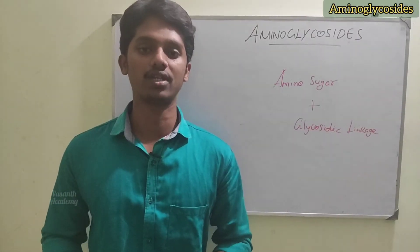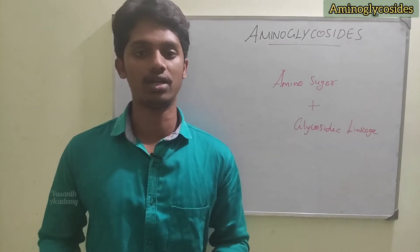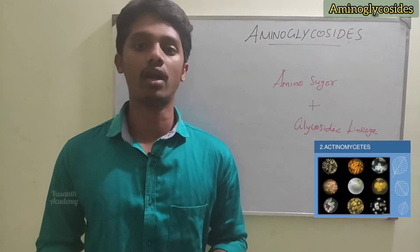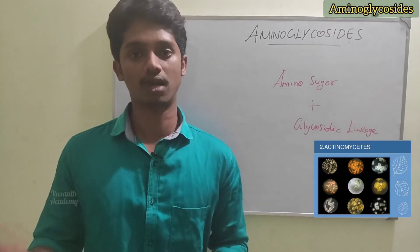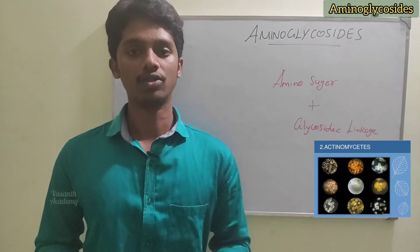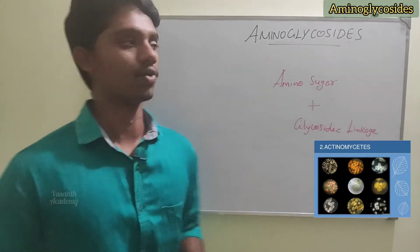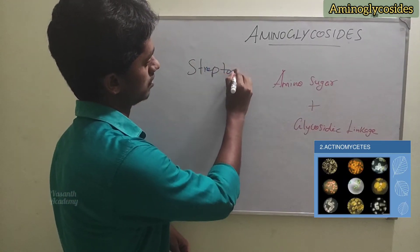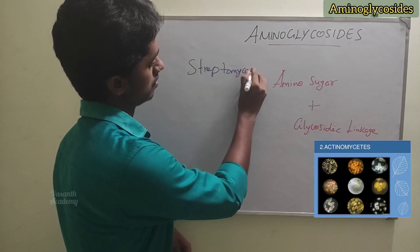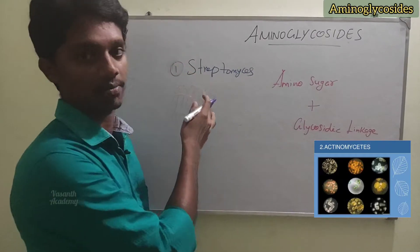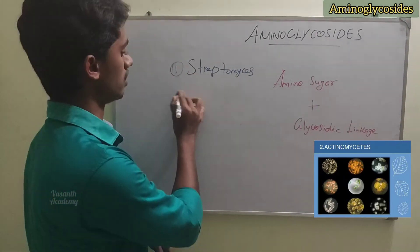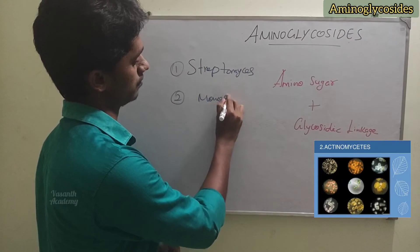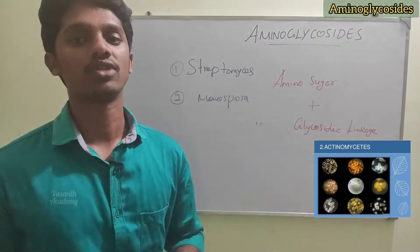Aminoglycosides are derived from soil actinomycetes of two genera. There are two varieties in the soil. The first is Streptomyces, one type of actinomycetes soil. The second genus is Micromonospora.